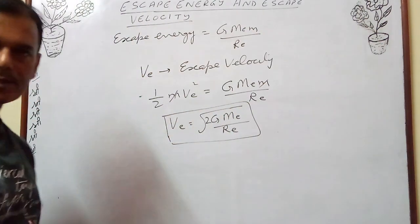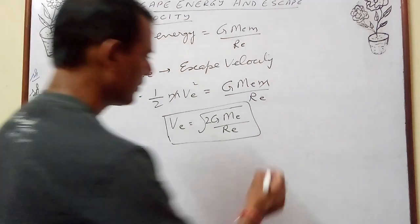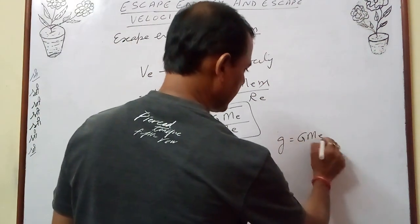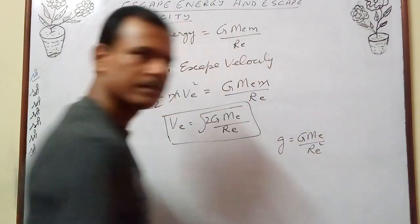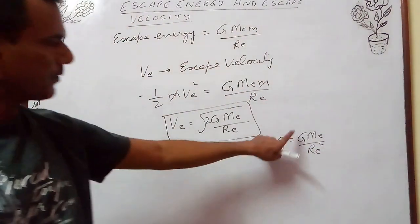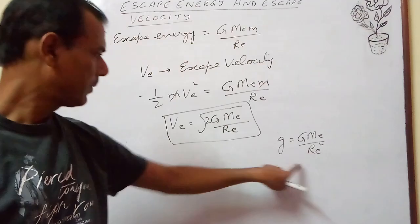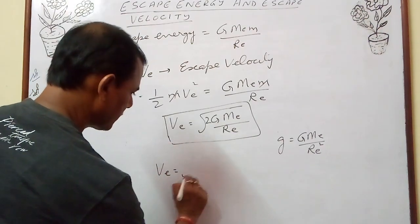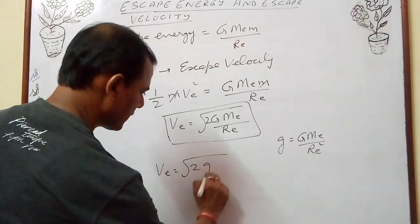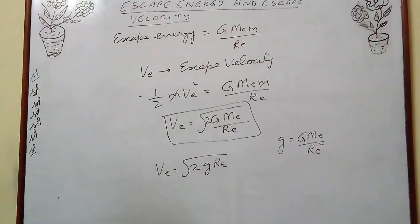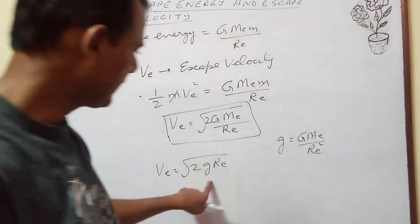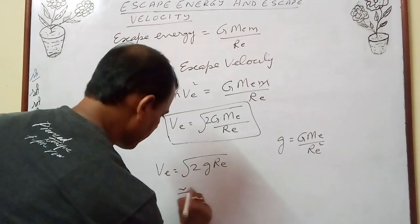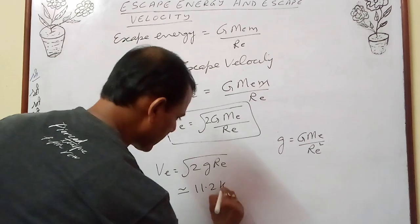Now in terms of acceleration due to gravity, small g equals G·Me/Re². So G·Me equals g·Re². Substituting, Ve equals the square root of 2·g·Re. When you put in the values of g and Re for earth, it comes out to be approximately 11.2 km per second.